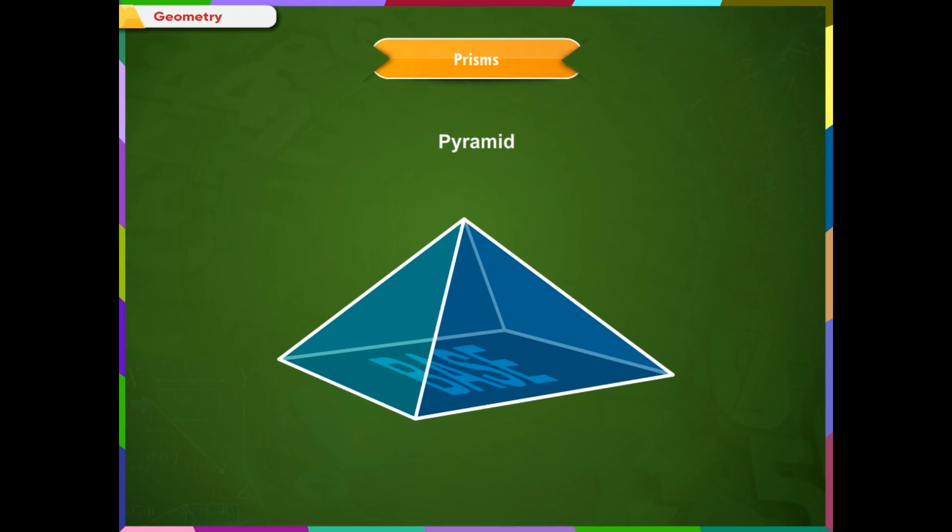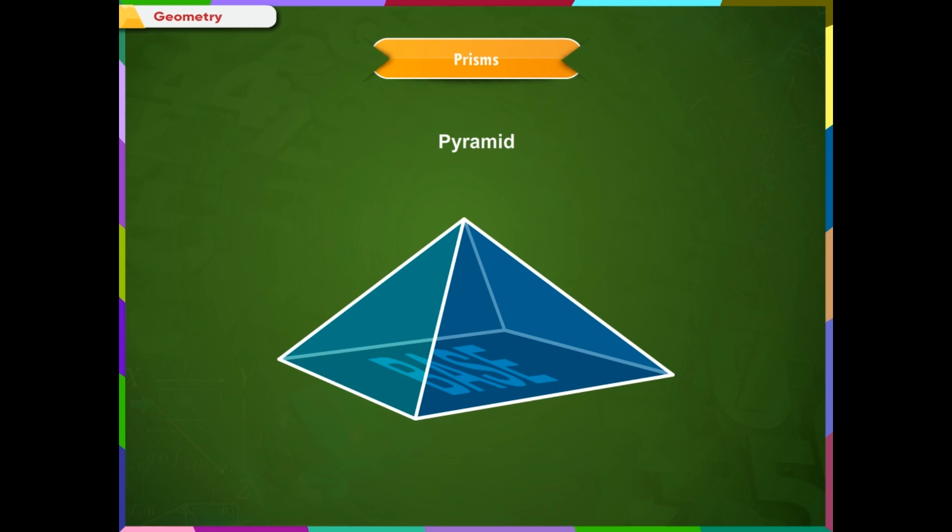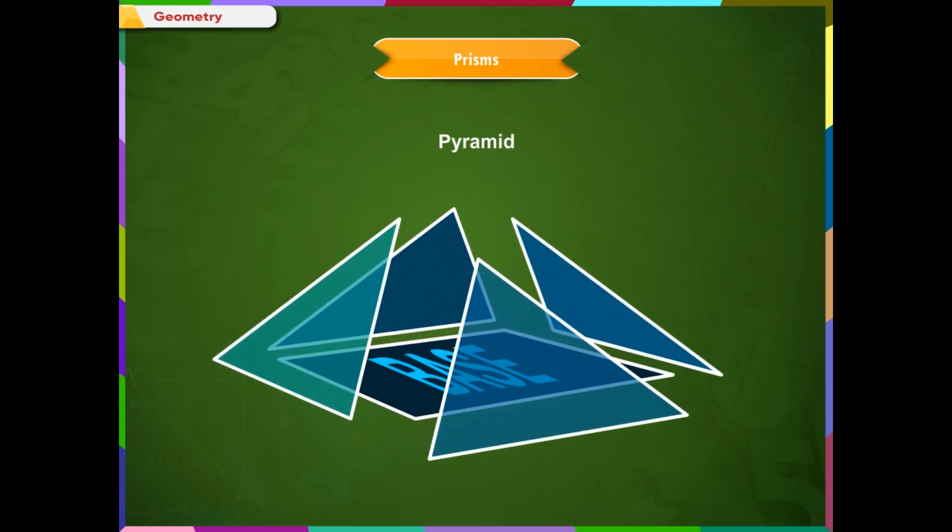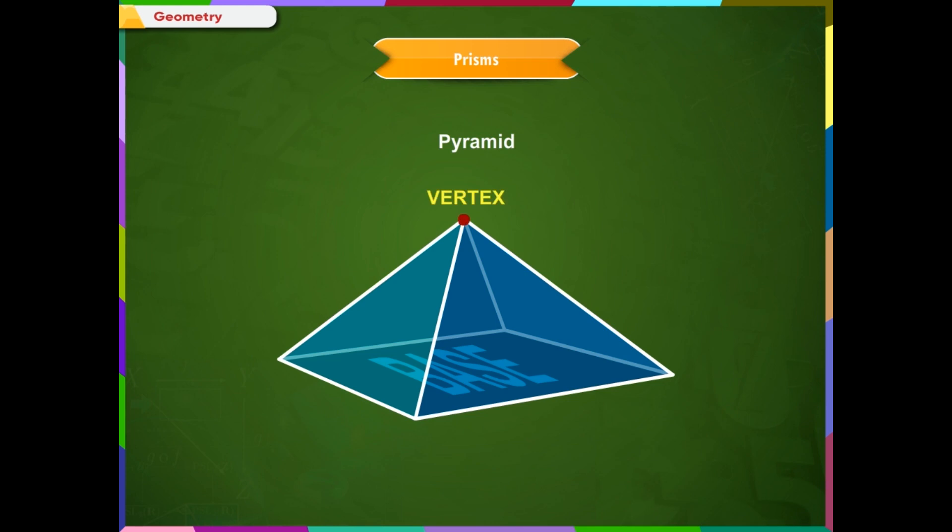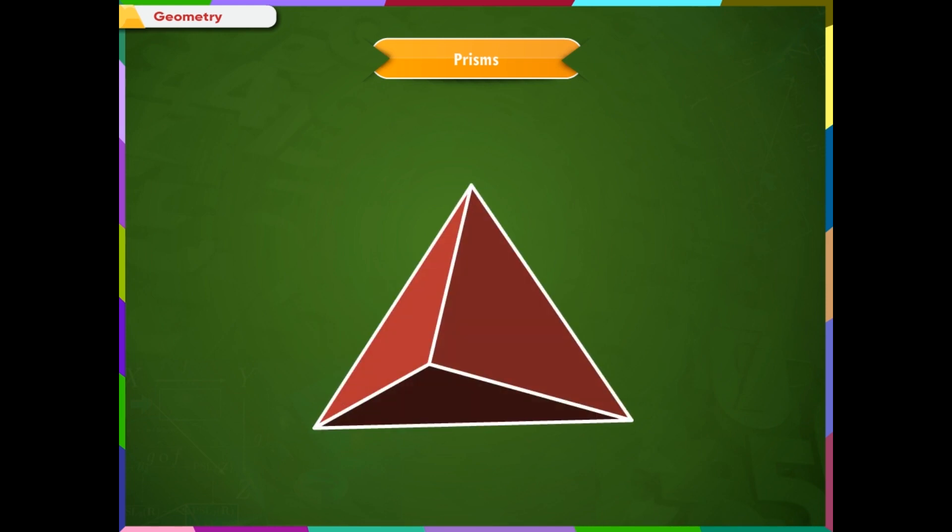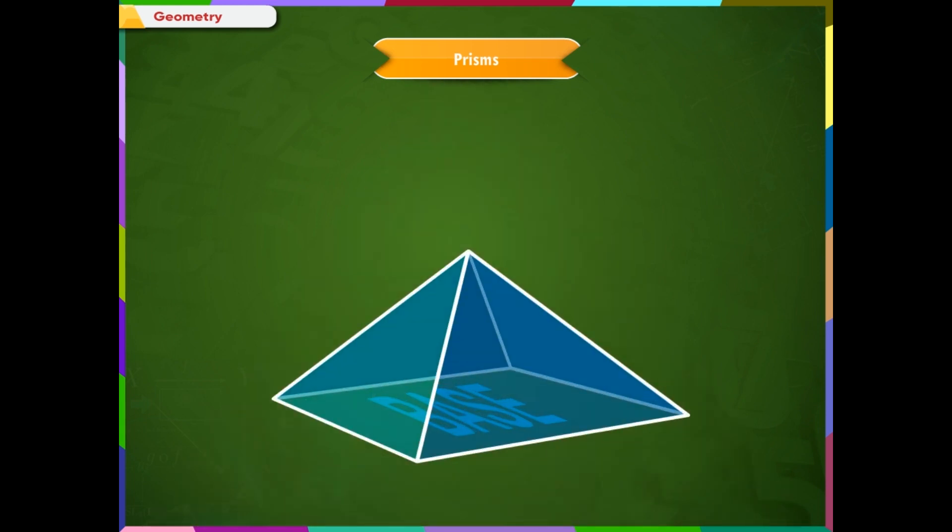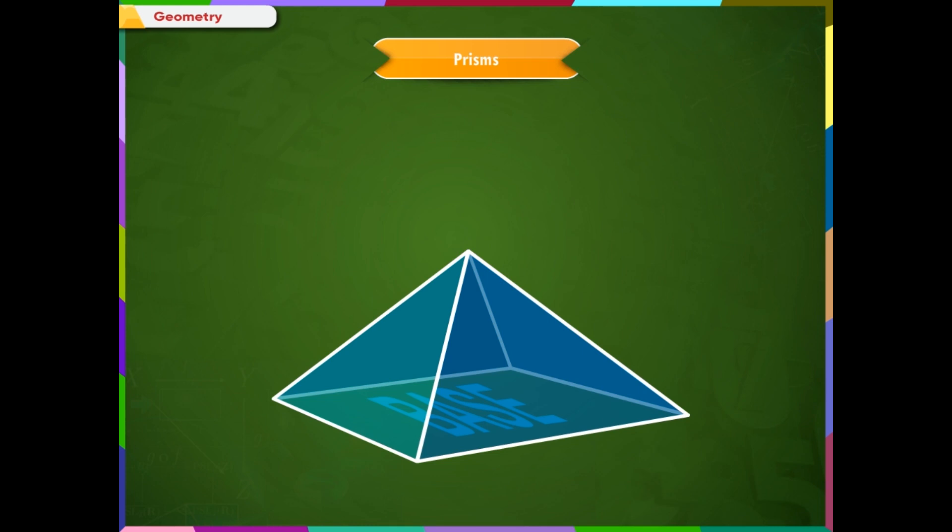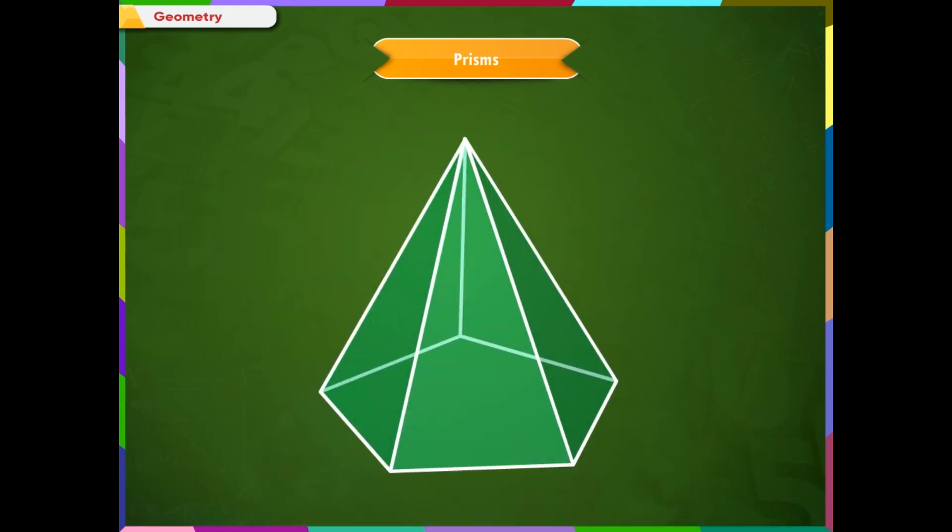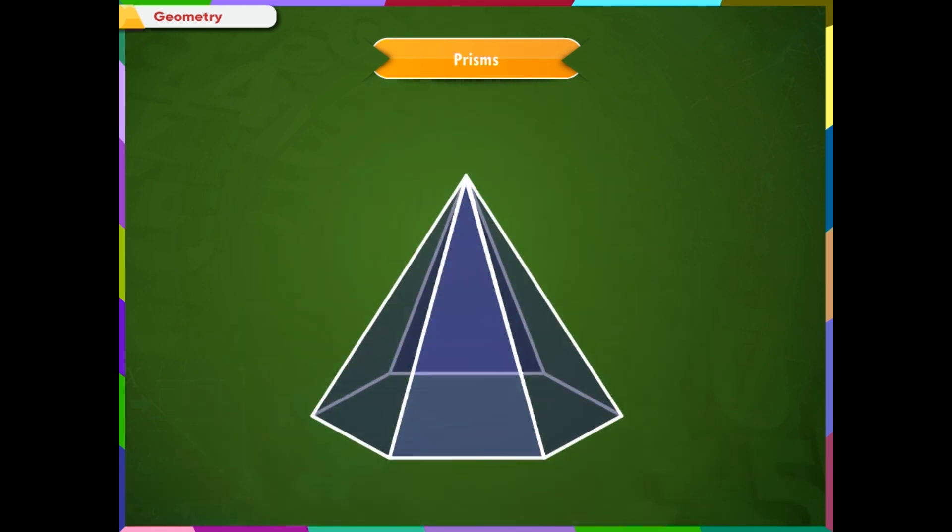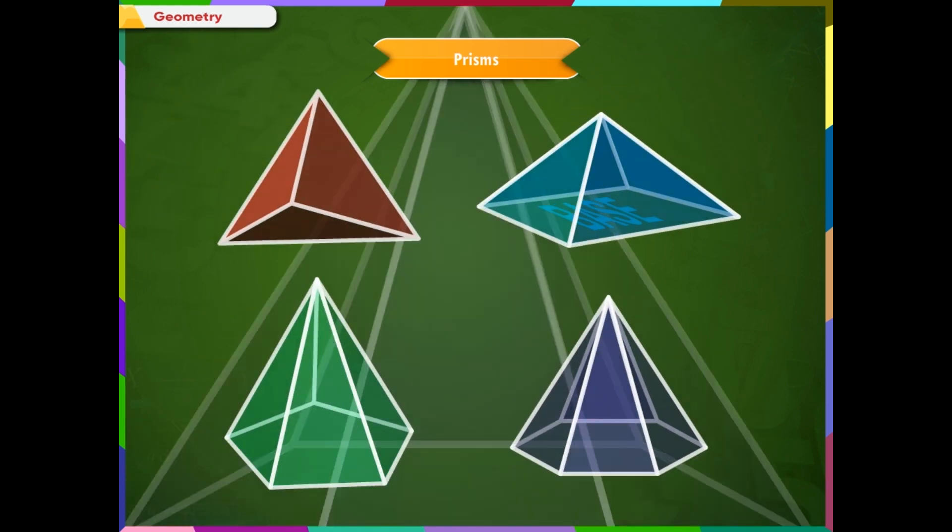Pyramid. A pyramid is a polyhedron that has a base and three or more triangular faces that meet at a point called the vertex. These triangular sides are sometimes called the lateral faces to distinguish them from the base. Whatever the shape of the base, the pyramid is named after it.